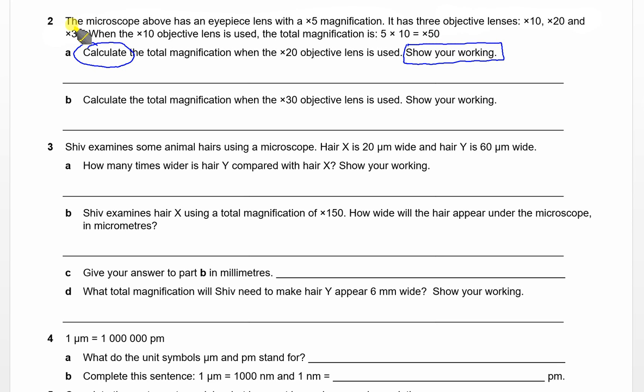The question gives us some information. The microscope above has an eyepiece lens with a times 5 magnification. It has three objective lenses: times 10, times 20, and times 30. Then it gives you an example of how you can calculate the total magnification. Let's use those bits of information to calculate the total magnification when the times 20 objective is used. We've got the number 5 for the eyepiece lens and 20 here. So it's just 5 times 20. That's the working I've shown. Now I'm going to calculate the answer: 5 times 20 is 100. That's the magnification.